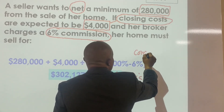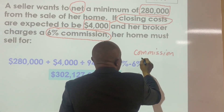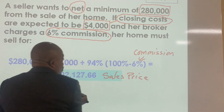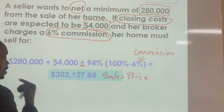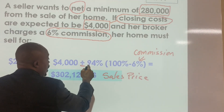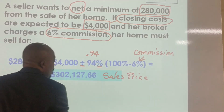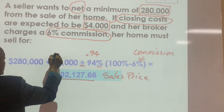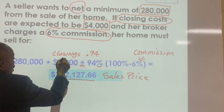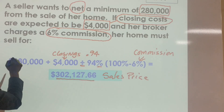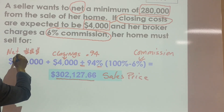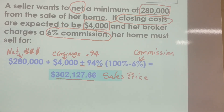This is the commission — 6% is the commission. When you divide by a decimal, such as 0.94, it results in a higher number. So dividing by 94% gives you the full sales price. The $4,000 is the closing cost, and $280,000 is the minimum net amount she wants. That's how we come up with the answer.